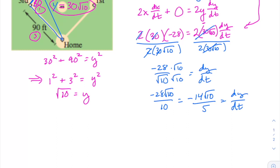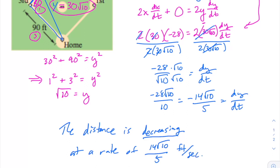And so if we were gonna write a sentence about this, we would say the distance—that's what we were describing, the distance of the player to home plate—the distance is decreasing because it's a negative rate of change, at a rate of 14 root 10 over 5. No need to write the negative because that's what the word decreasing implies. At a rate of 14 root 10 over 5, and our units are feet per second in this problem.